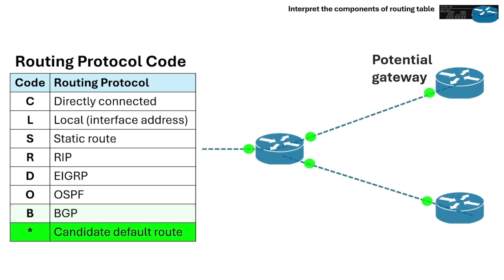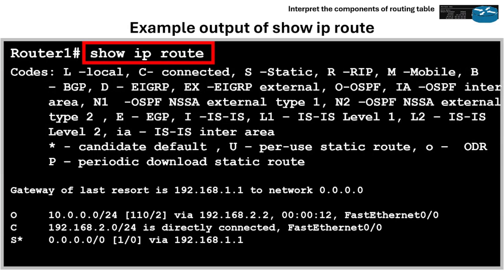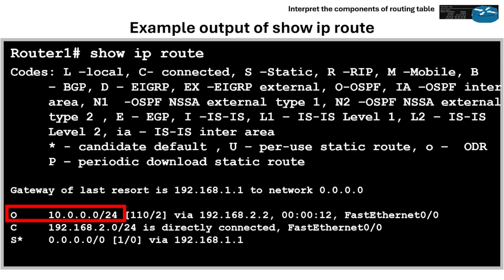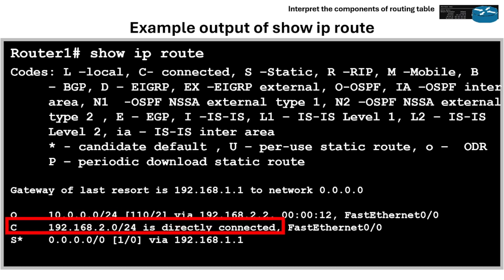The asterisk is for Candidate Default, which is a network route that the router identifies as a potential gateway of last resort, but doesn't automatically install as the default route. For example, in a 'show IP route' output, the network 10.0.0.0/24 shows that this route was learned via OSPF. 192.168.2.0/24 shows that this is a directly connected route. And 0.0.0.0/0 is a statically configured default route, indicated by the asterisk.